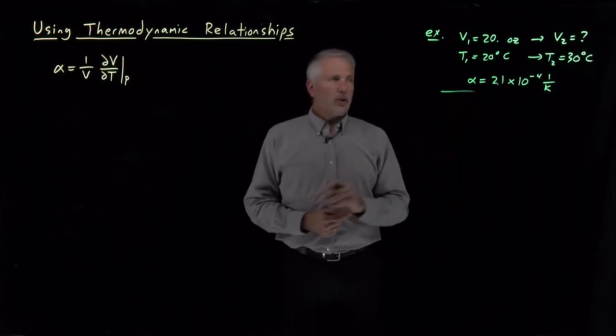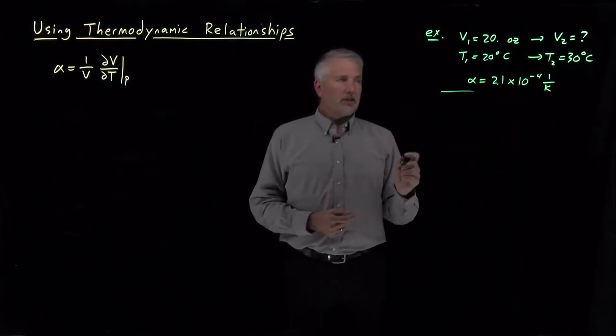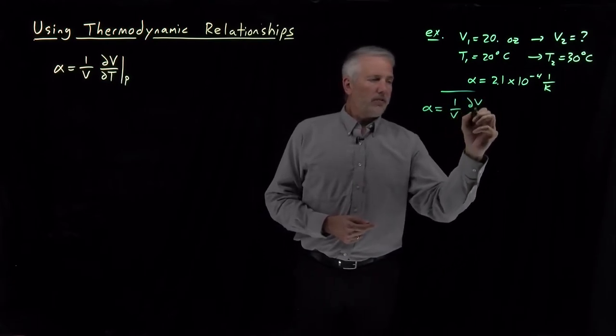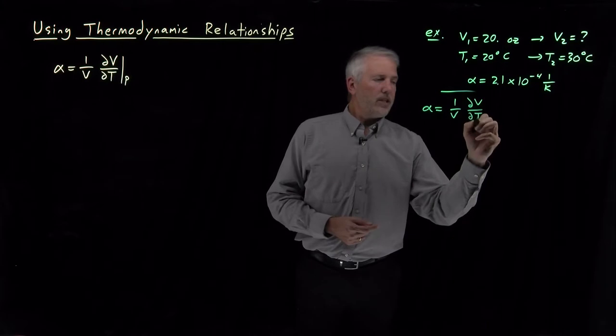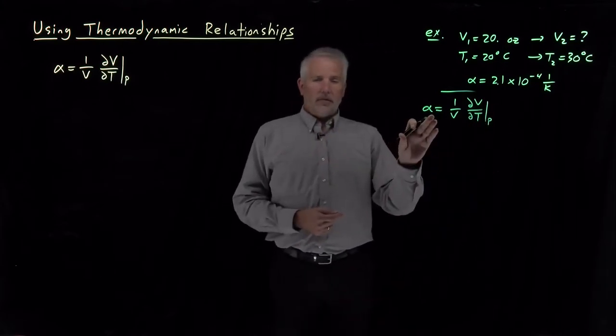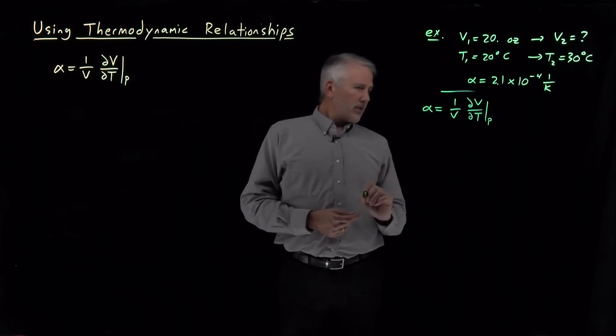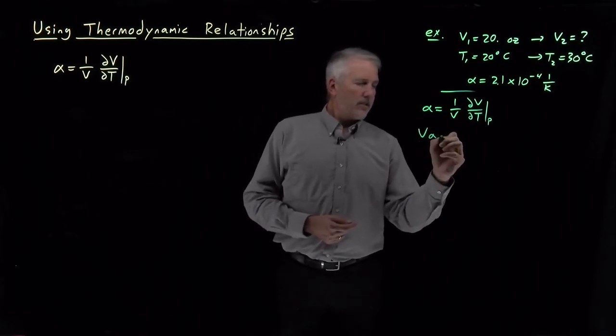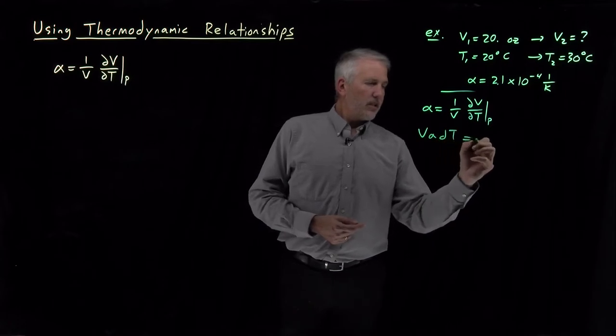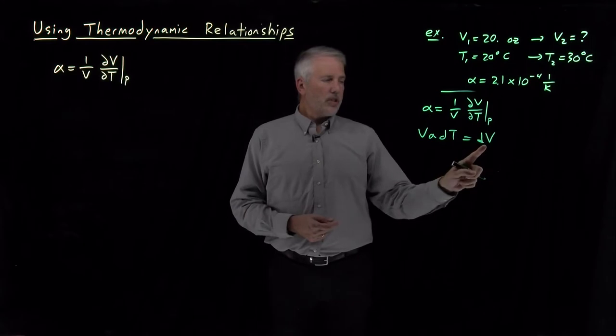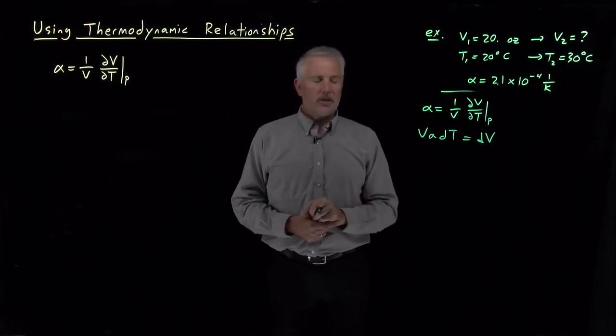To answer the question of how much the volume changes, we remind ourselves again what the definition of alpha is. Alpha is 1 over V dV dT at constant pressure. If I rearrange that equation, let's go ahead and put the V and the alpha and the dT on this side. So V alpha dT is equal to dV, as long as I do that process at constant pressure.